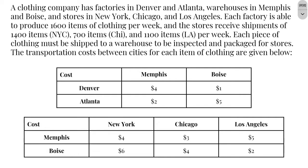A clothing company has factories in Denver and Atlanta, warehouses in Memphis and Boise, and stores in New York, Chicago, and Los Angeles. Each factory produces 1,600 items of clothing, and the stores receive 1,400, 700, and 1,100 items respectively per week. The clothing has to go through the factories, then to the warehouses, then to the stores. This stopping point at the warehouses is what makes it a transshipment problem.